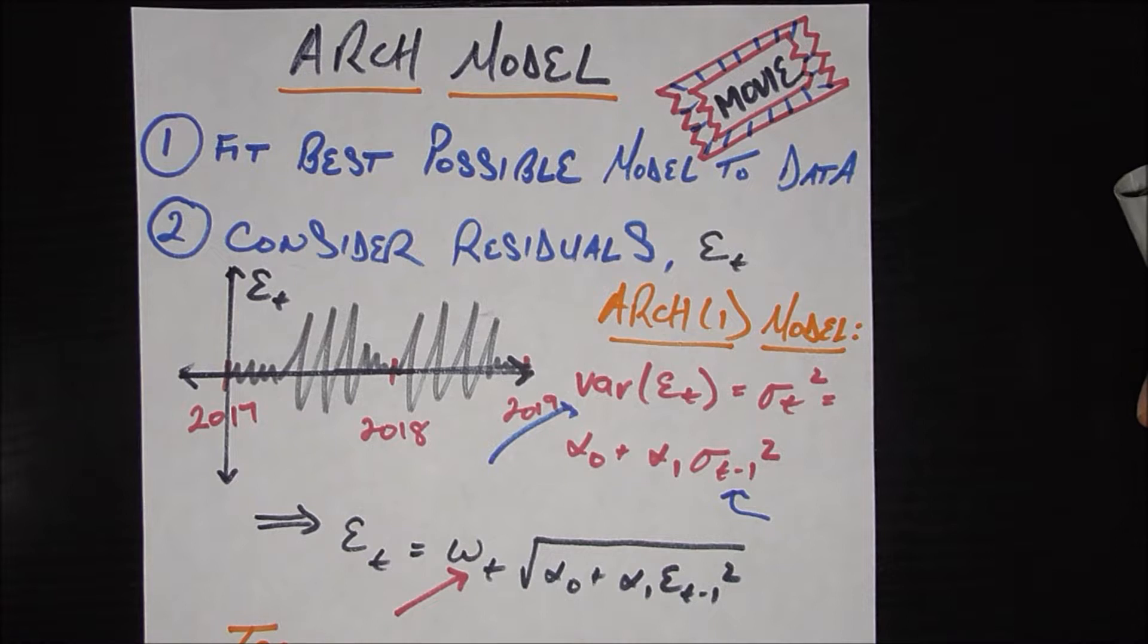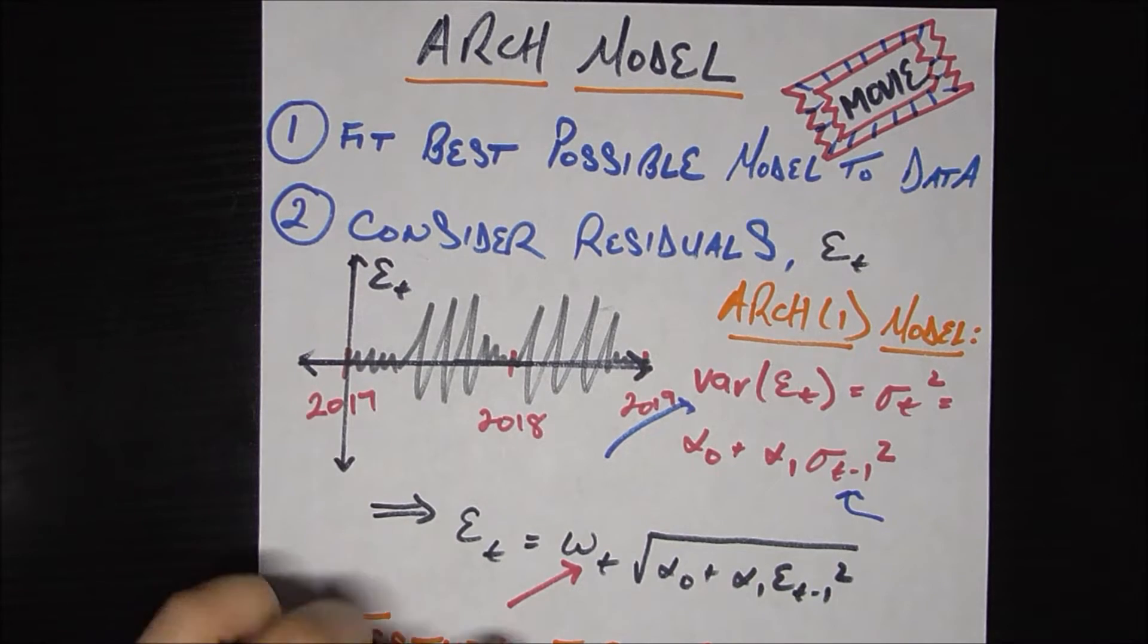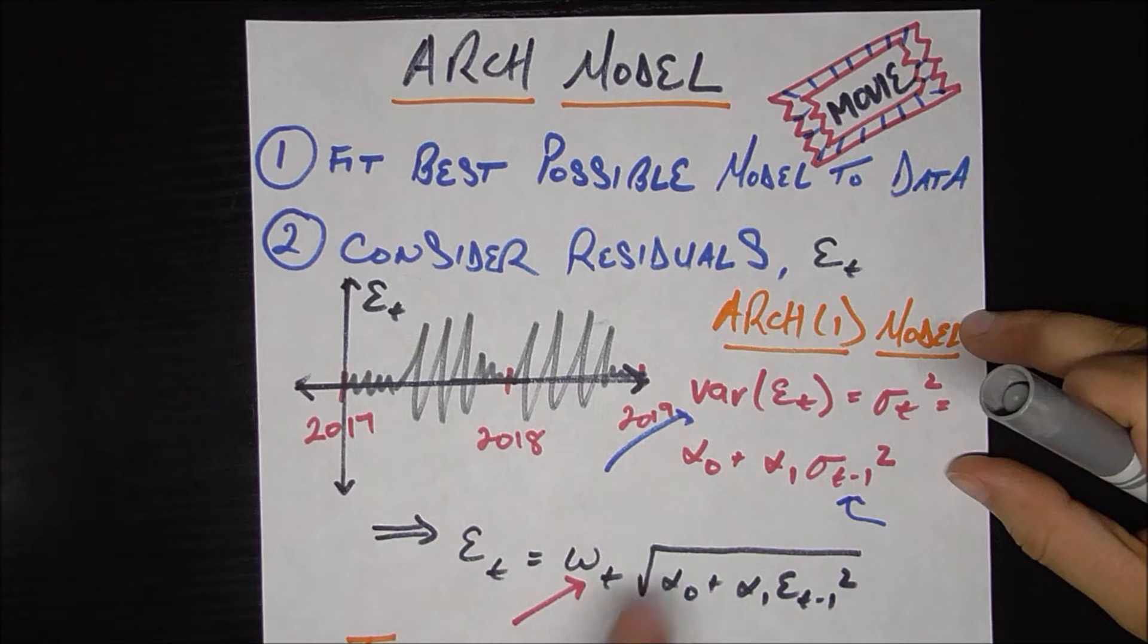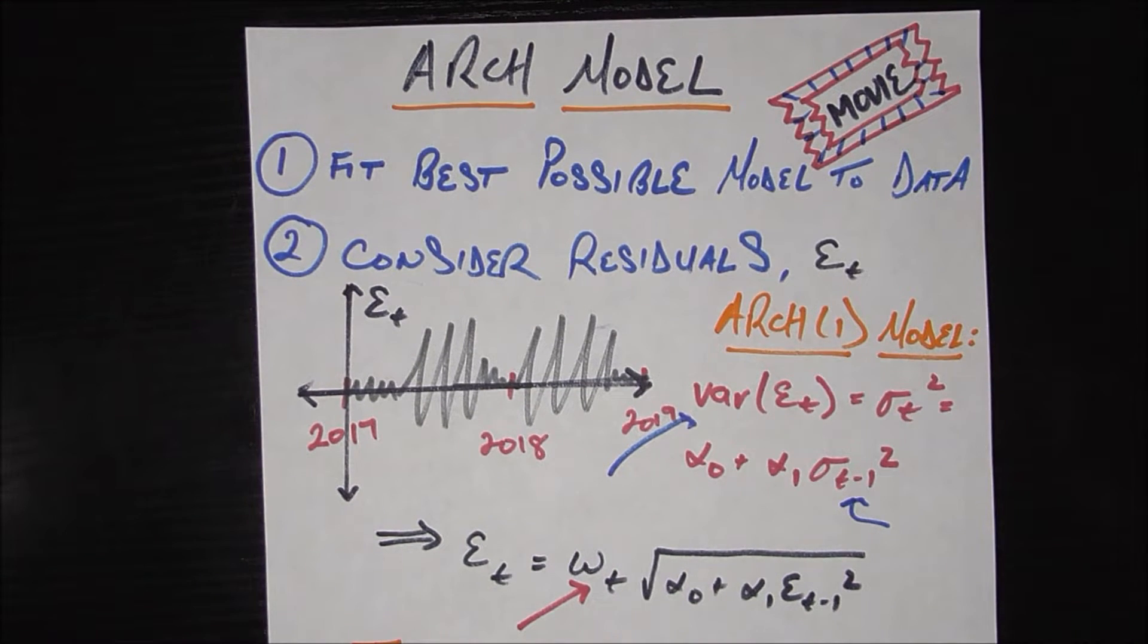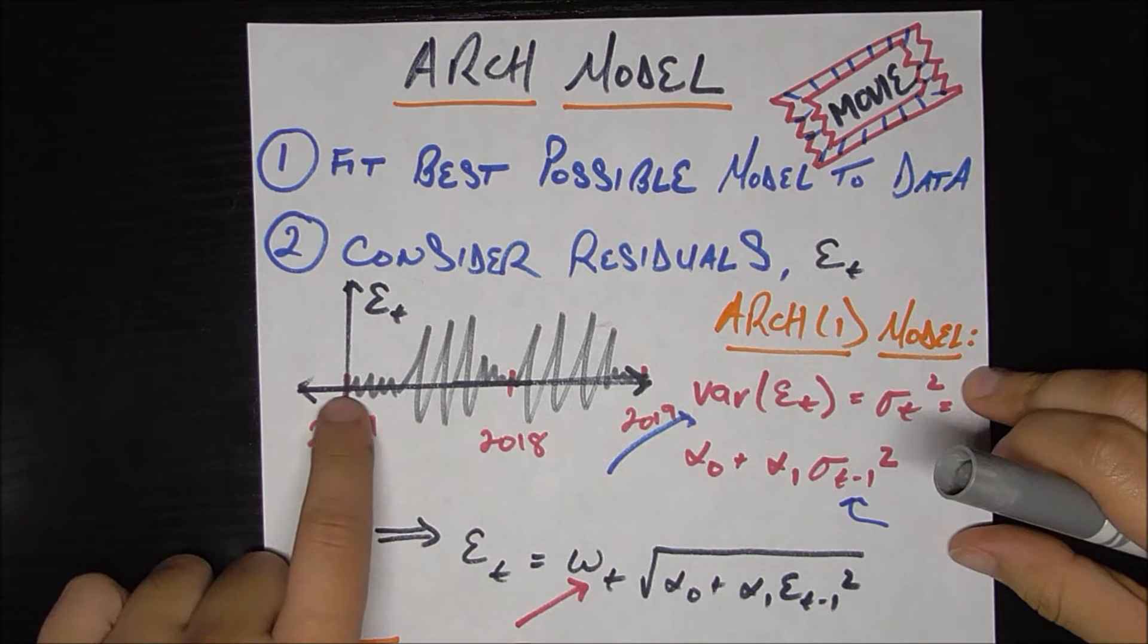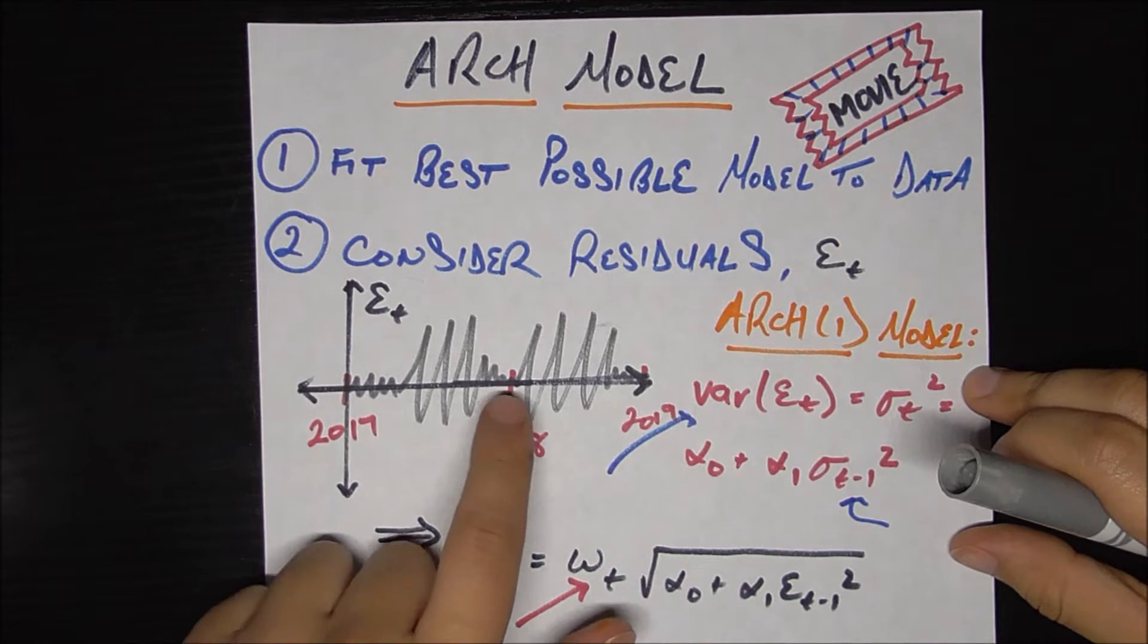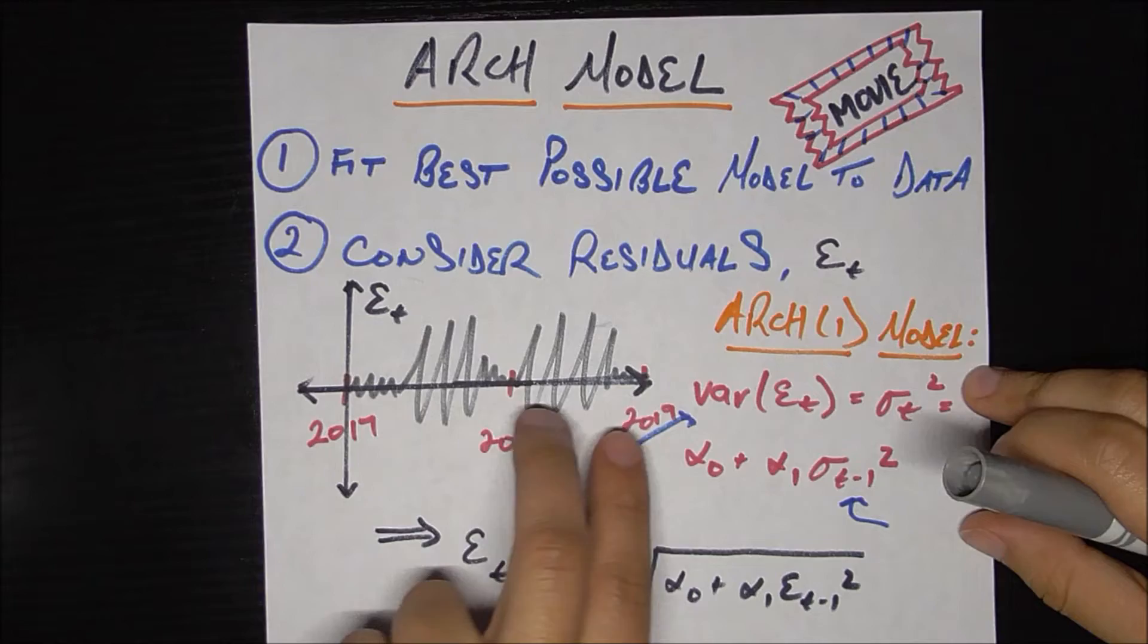So each week you take the actual number of tickets you sold minus the predicted number and you plot that on this chart right here. And you end up with this little graph here. So here's 2017, 2018, 2019. Now if something seems kind of off about this chart, you're right, there is something off about it. Because we see that in the beginning of each year, it seems like the volatility in your error is pretty low. Again, 2018, pretty low.